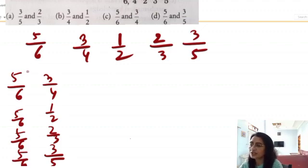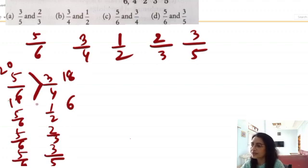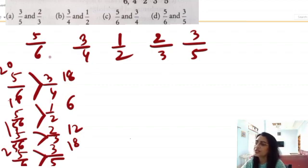Here we use cross multiplication. Compare 5/6 and 3/4: 4×5 = 20 and 6×3 = 18. Since 20 > 18, 5/6 is greater than 3/4. Compare 5/6 and 2/3: 3×5 = 15 and 6×2 = 12. Since 15 > 12, 5/6 is greater than 2/3. Compare 5/6 and 3/5: 5×5 = 25 and 6×3 = 18. Since 25 > 18, 5/6 is greater than 3/5. That means 5/6 is the largest among all.